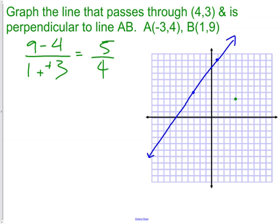We can check this by looking at the graph. Count from the points. Up one, two, three, four, five, over one, two, three, four. I went from blue dot to blue dot. I have the correct slope.